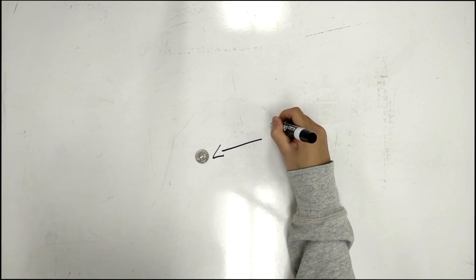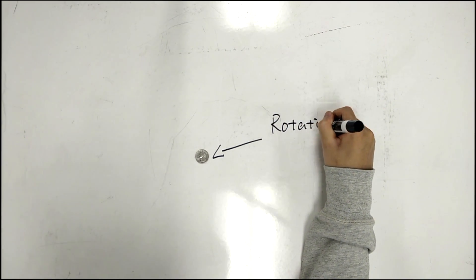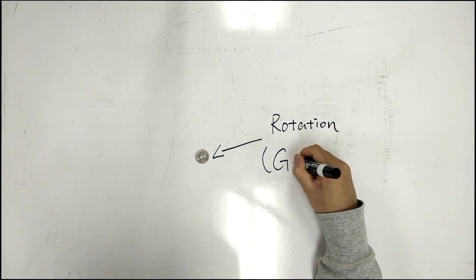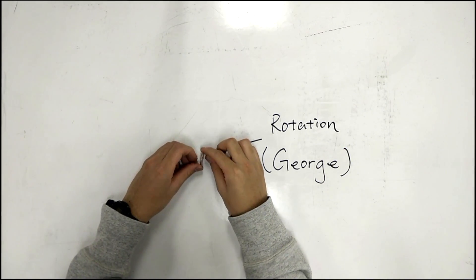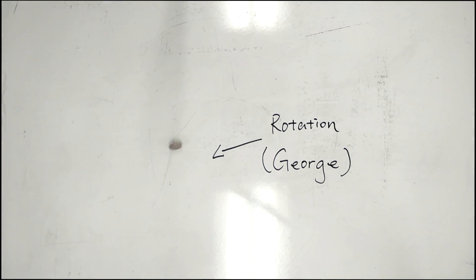Rotations are when the line of the net force does not pass through the center of mass. So, it causes our friend George to spin.